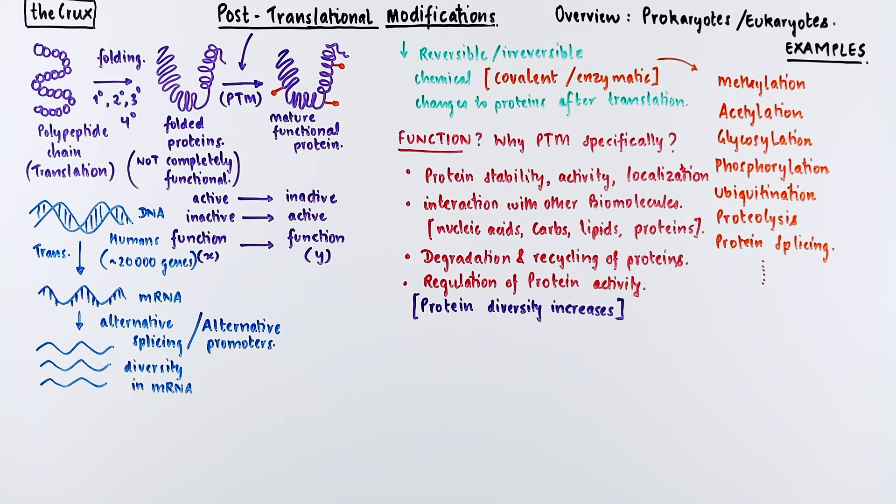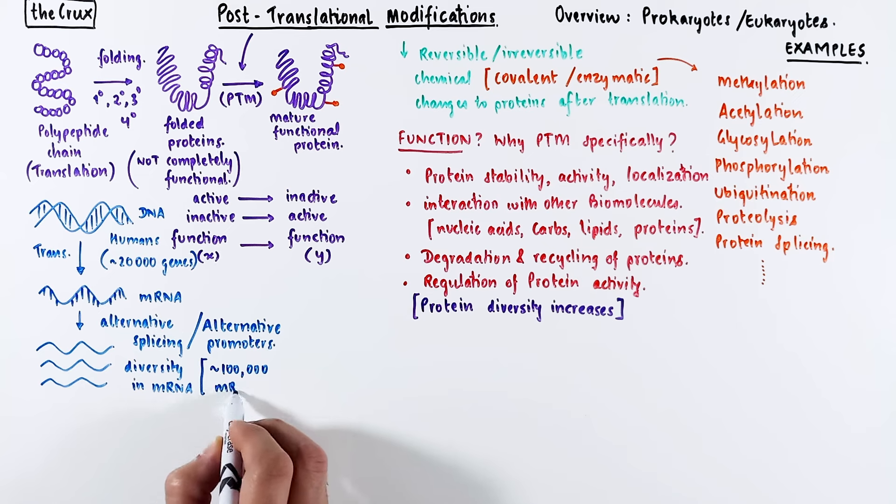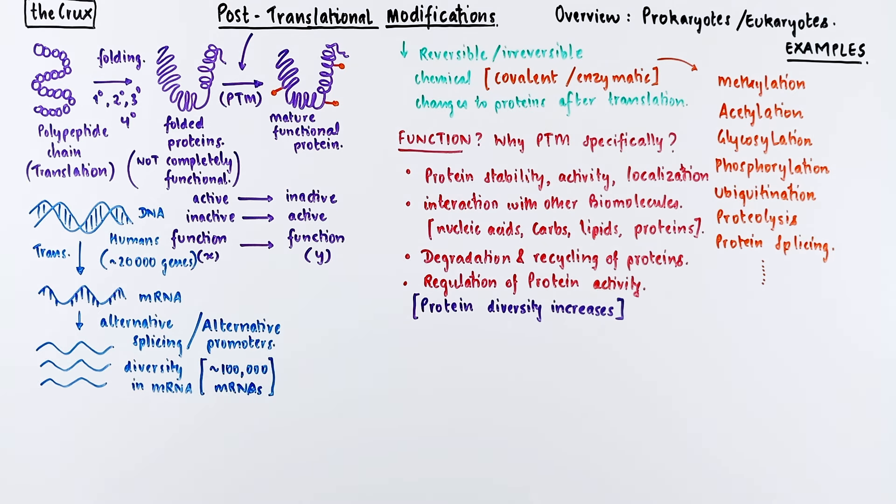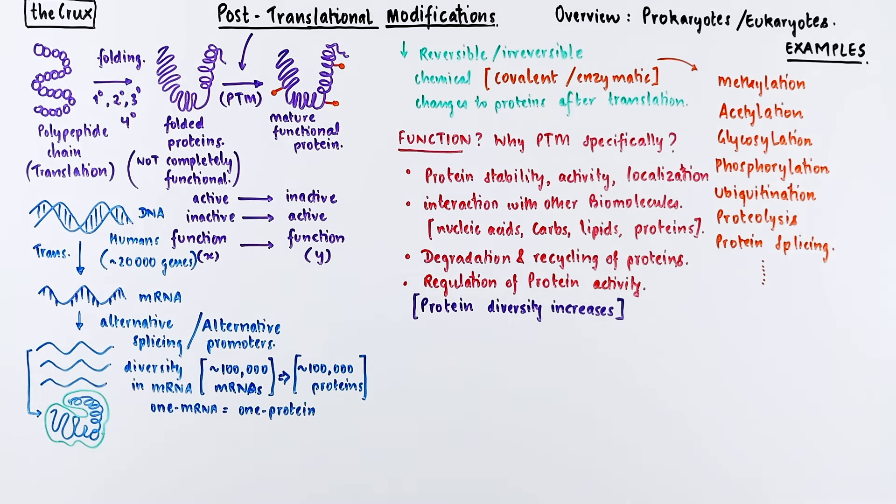So one gene in DNA can produce multiple types of RNA. On average, there are about 100,000 mRNAs in a cell. We know that one mRNA can only produce one type of protein. So if all 100,000 mRNAs are unique, you'd expect 100,000 unique proteins in a cell. Turns out that's not true. There are more than a million different functional proteins in a cell.